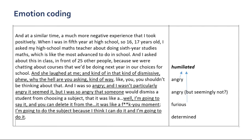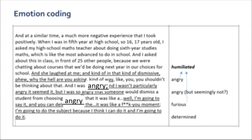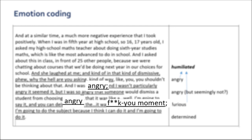Emotion coding is part of the affective coding techniques, and Saldana describes it as labeling the feelings the participants may have experienced or are inferred by the researcher about the participant. One thing to remember when emotion coding is that when anger, mad or similar codes are present, that anger is a consequential emotion — a triggering emotion precedes it, such as embarrassment, anxiety or shame. This is evident in the example when the respondent repeatedly comments on their anger at the dismissive attitude of the teacher, in front of fellow students, and they feel humiliated or embarrassed. The anger expressed actually progresses from angry to so angry to using an expletive to express their fury at the past situation.